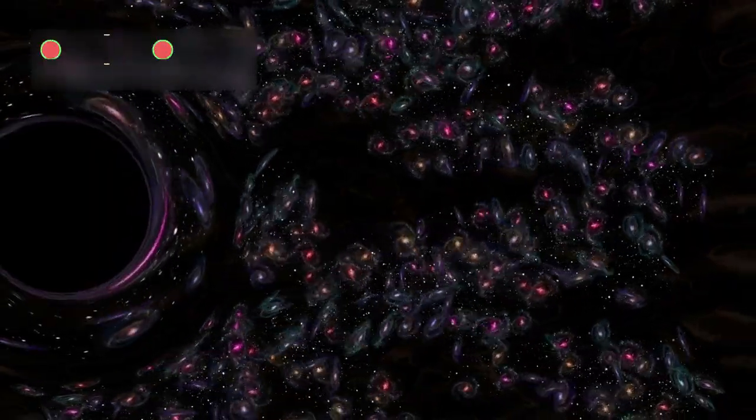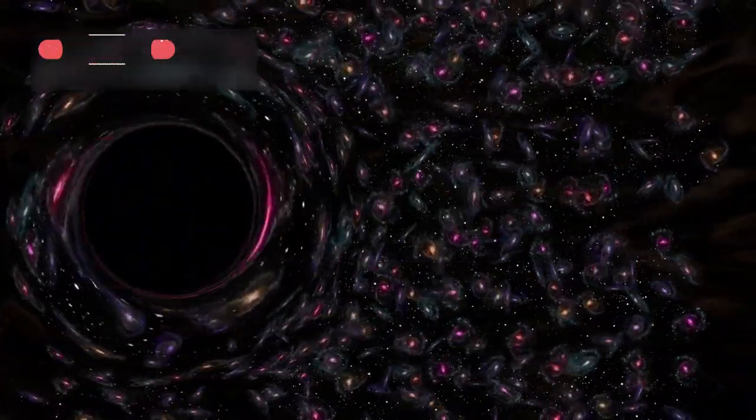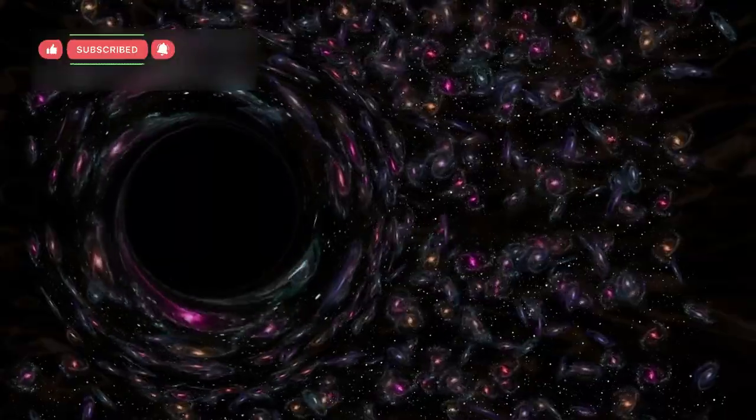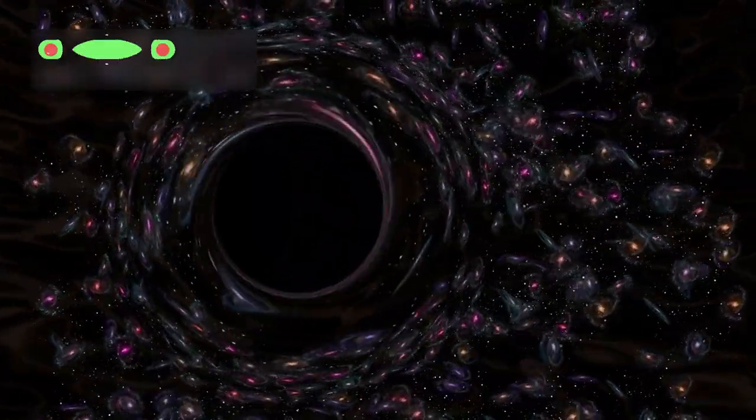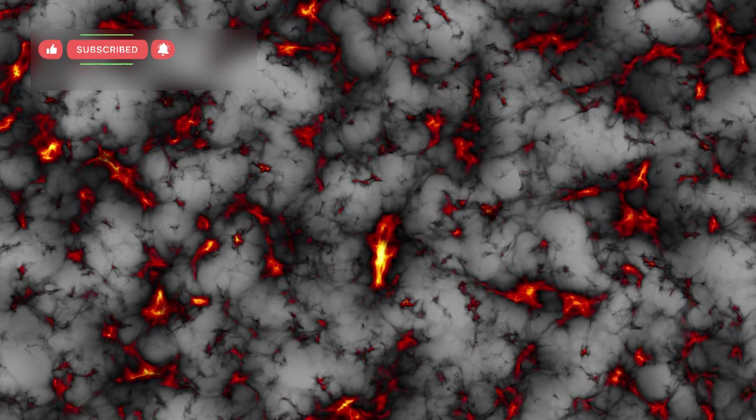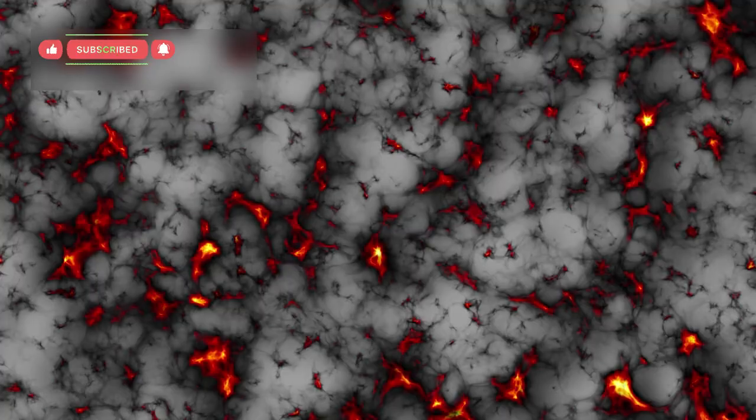Webb's observations showed that the galaxies within this protocluster were not randomly scattered. Rather, they were gravitationally bound, swirling together like droplets merging into a river. Over billions of years, such structures grow into giant cosmic cities filled with thousands of galaxies.